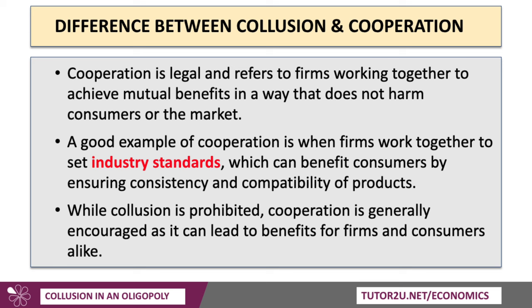Collusion is not quite the same as co-operation. A lot of business co-operation is legal — it's where firms find opportunities to work together to achieve mutual benefits, but in a way that does not harm consumers or the market. A really good example is where firms agree to set industry standards, such as safety standards in building, or industry standards for airbags in vehicles, that can benefit consumers by ensuring consistency and compatibility of products. Co-operation is generally encouraged, in particular if it leads to positive spillovers for firms and consumers.